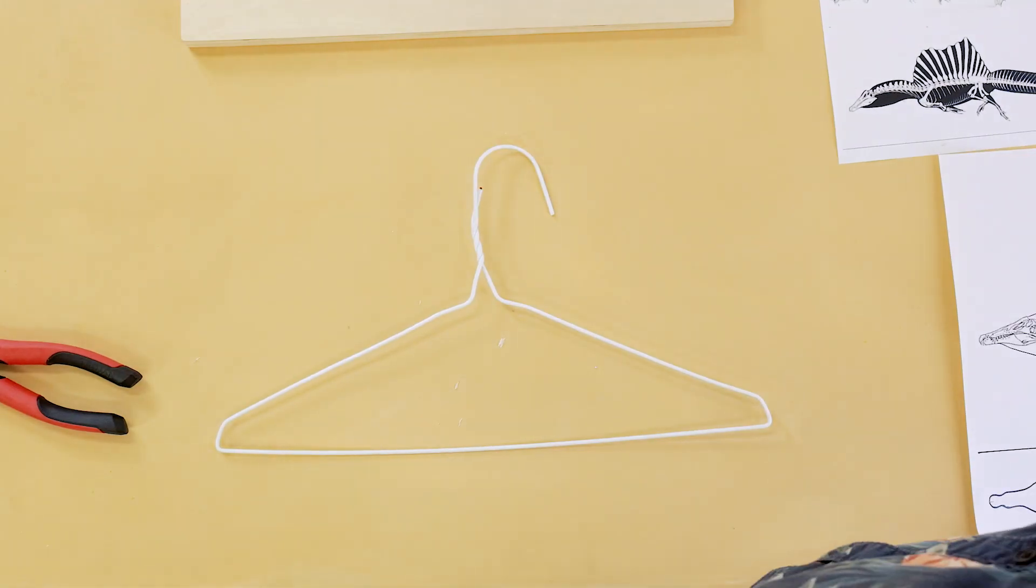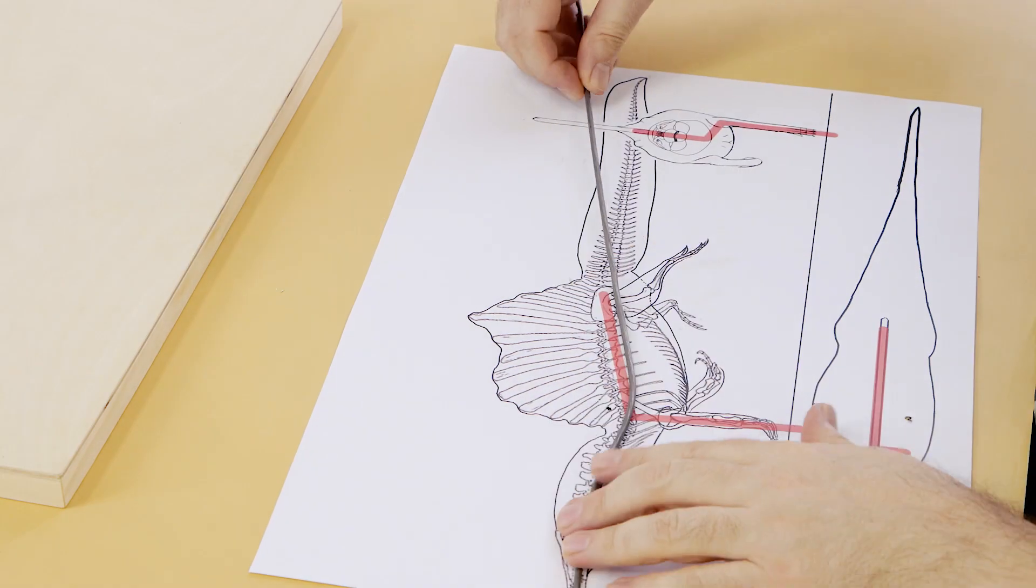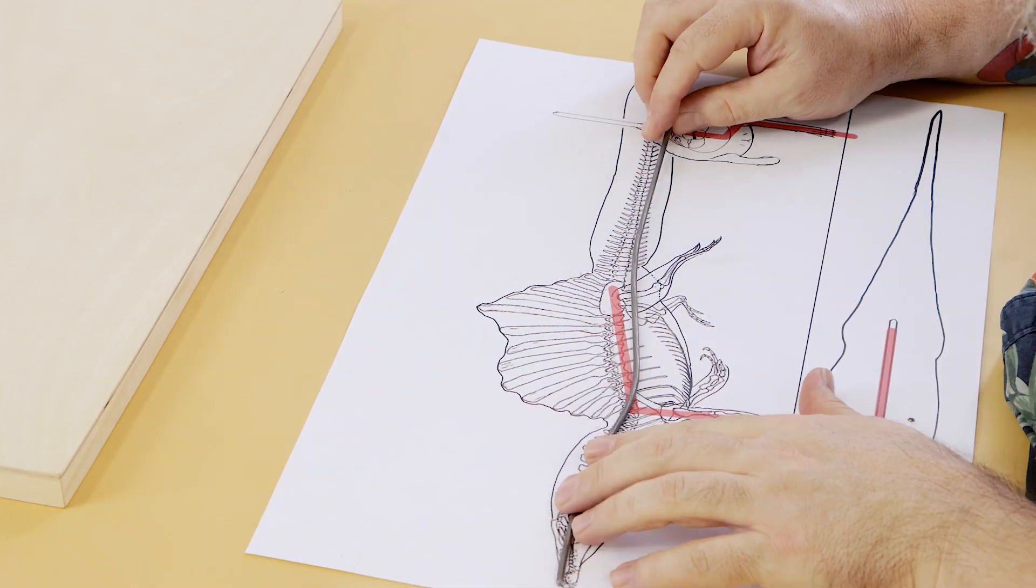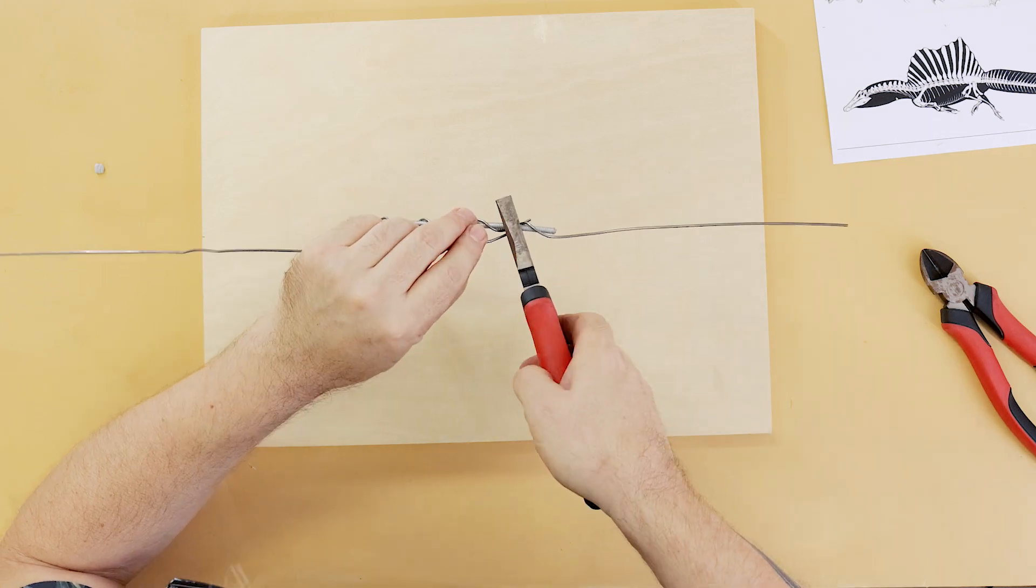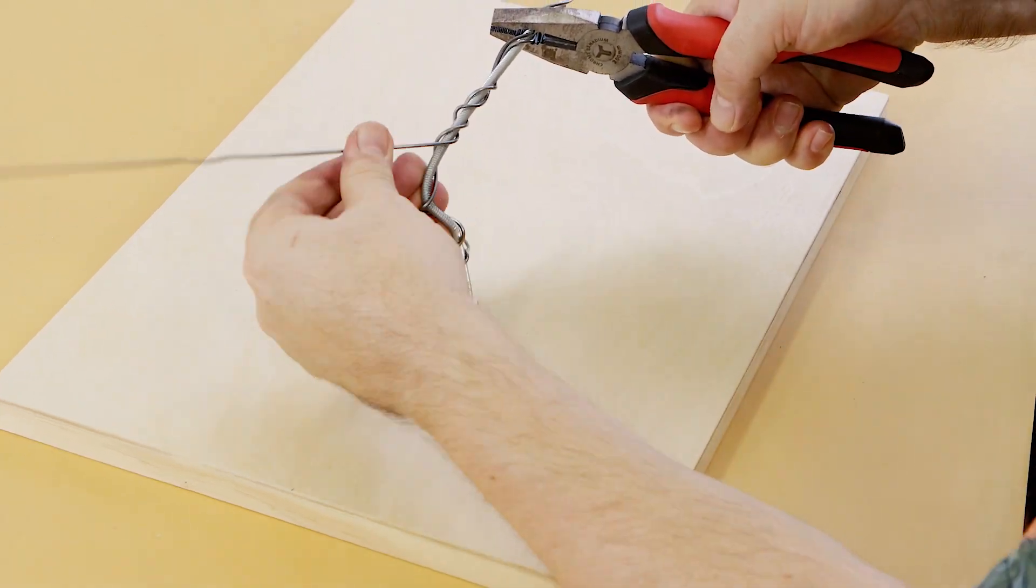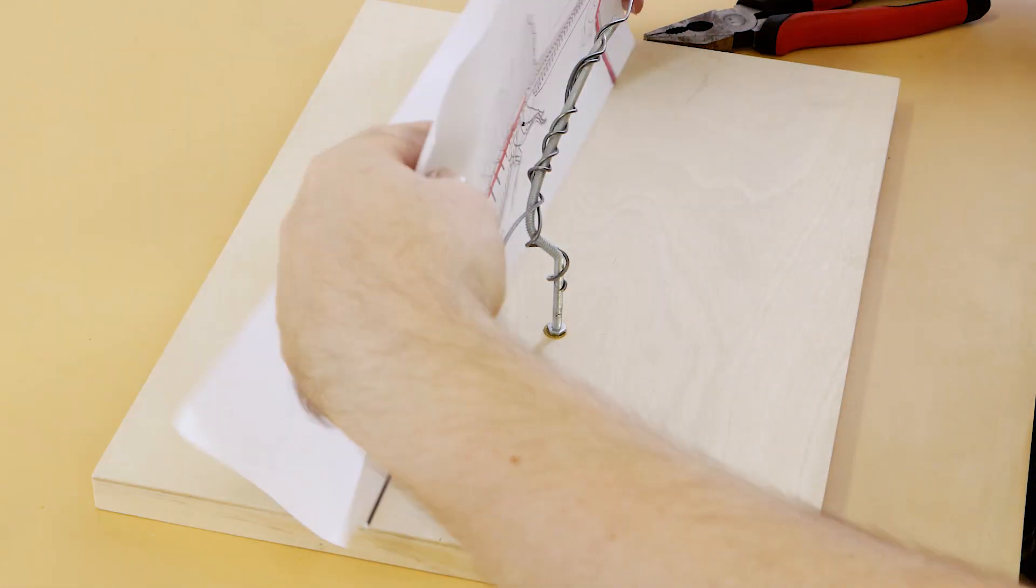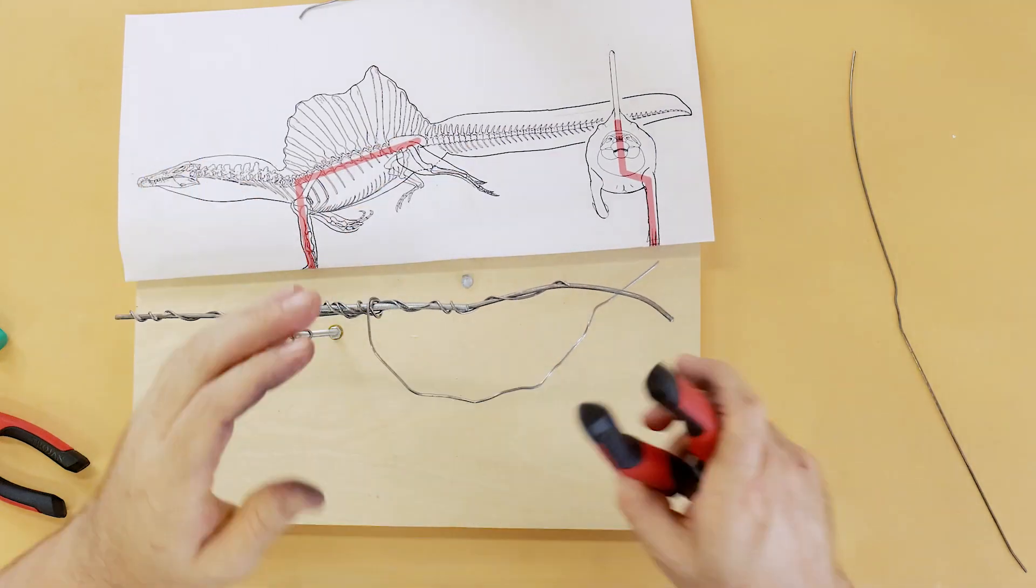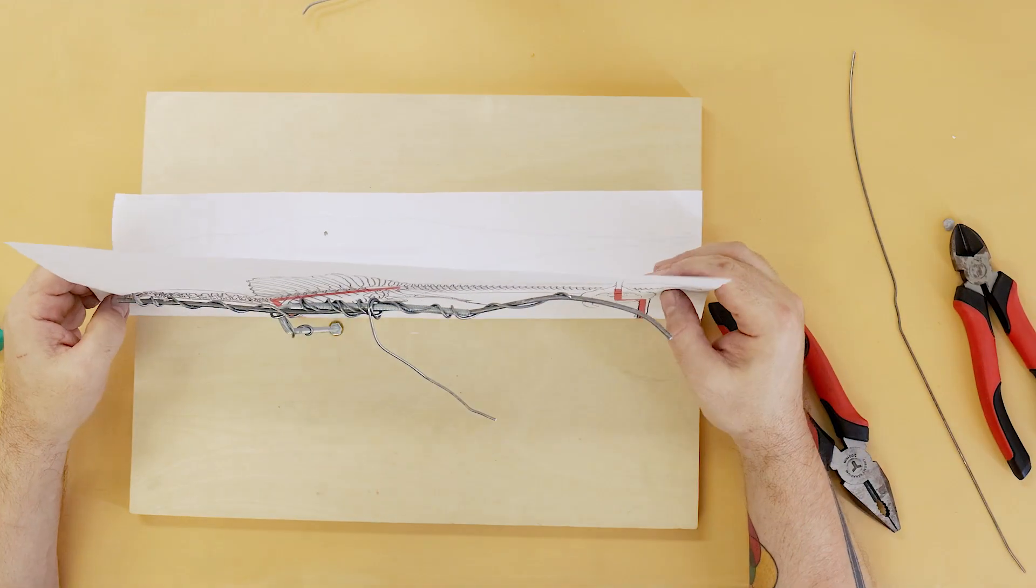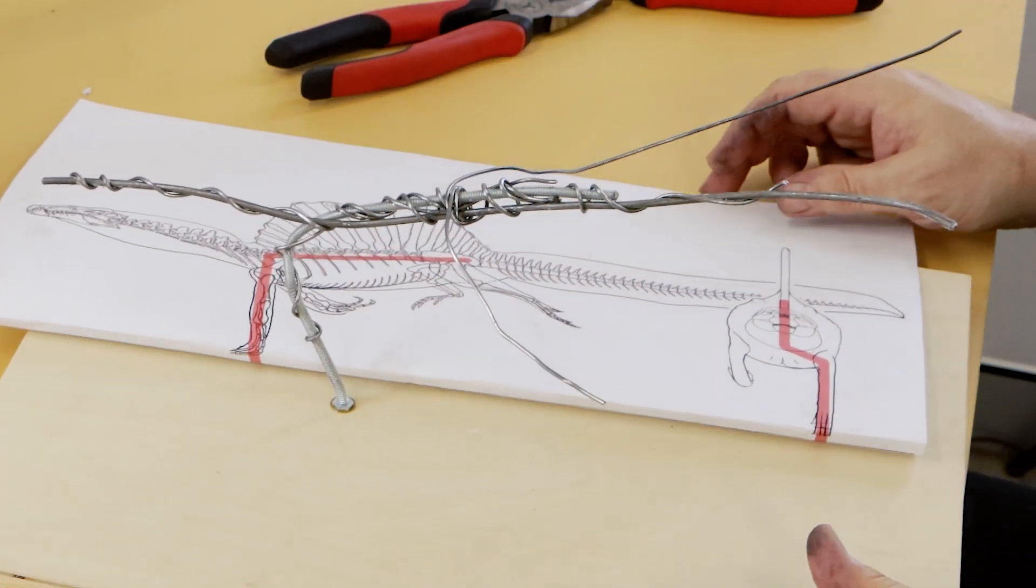We can then straighten out a coat hanger and bend this to the shape of the head to the tip of the tail. Cut it to size and bind it onto the booker rod with some more coat hanger wire. Constantly keep referring to the reference sheets to ensure that the armature lies within the perimeter of the outline. The other forelimb and two rear legs can be put in with more coat hanger wire twisted onto the existing armature. Bend this to shape then cut it to size.